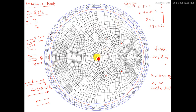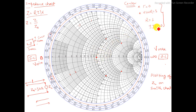Now talking about the center point of the Smith chart — whenever you get a load value, anywhere you find the load impedance, our aim is to reach this center point. This center point is called the matched point. At the center point: reflection coefficient gamma is 0, VSWR is 1, real part r is 1, and imaginary part plus or minus jx is 0. You have to remember these four properties of the matched point.